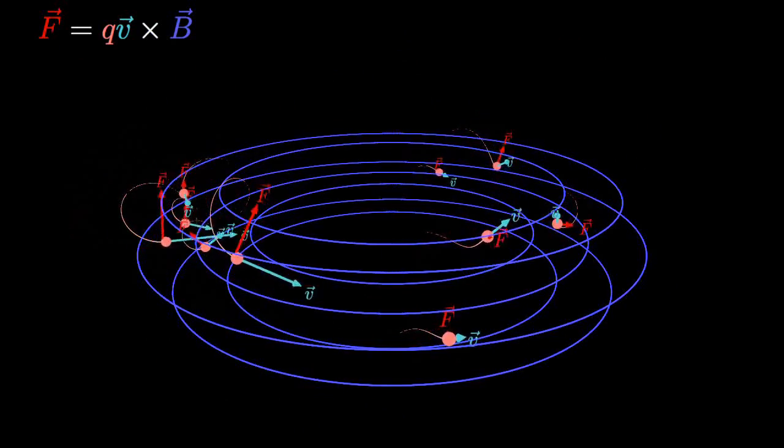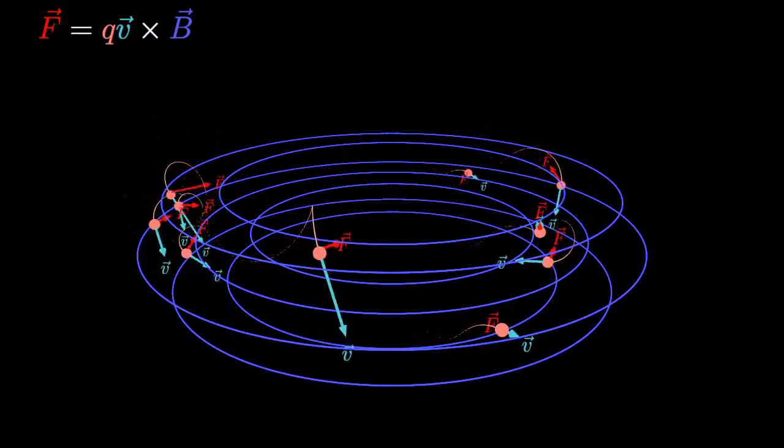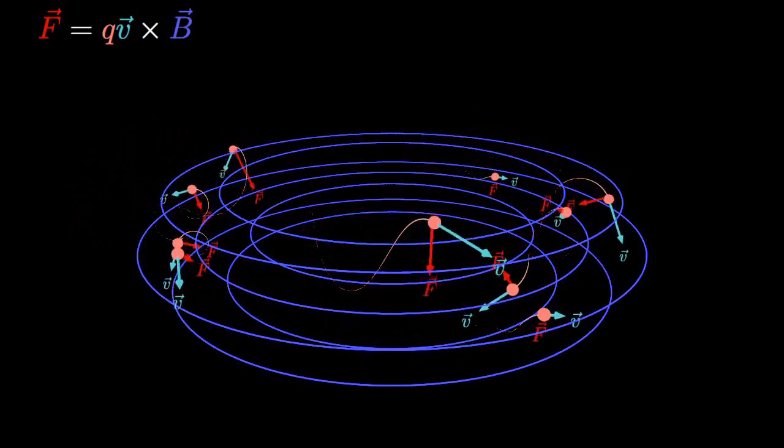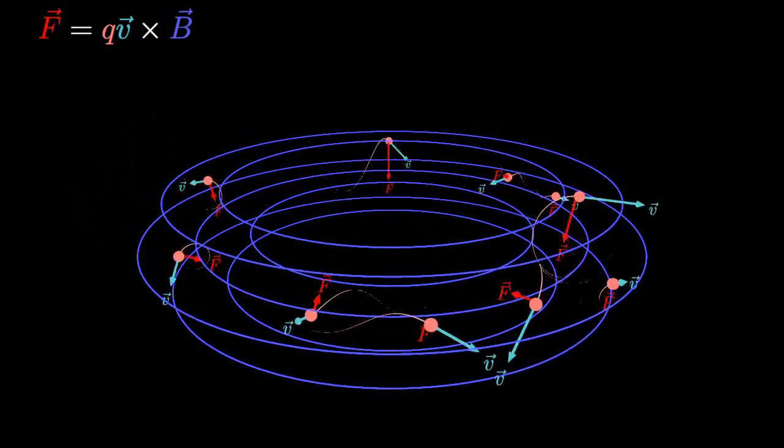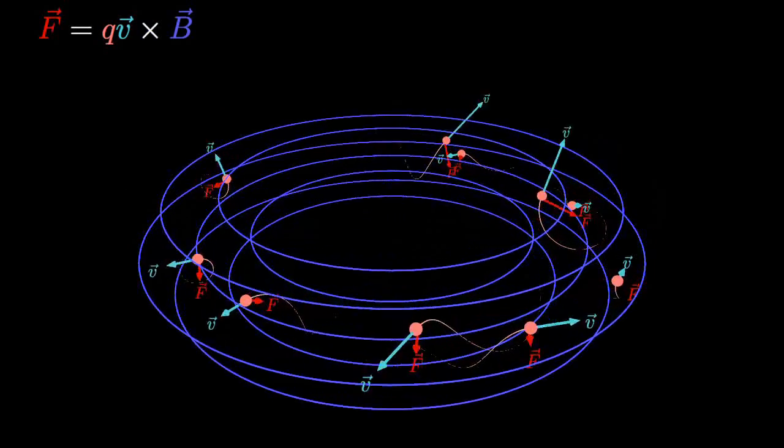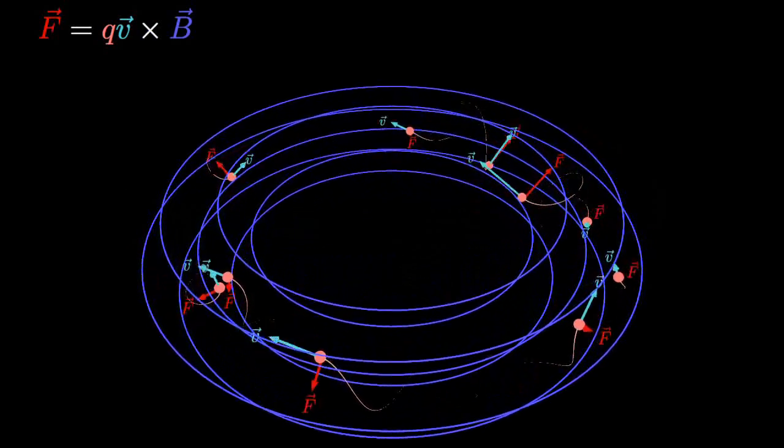A toroidal magnetic field can also trap charges by keeping the charges spiraling around the magnetic field lines. This is a simplified version of confinement used in plasma and nuclear fusion research projects, like the International Thermonuclear Experimental Reactor.